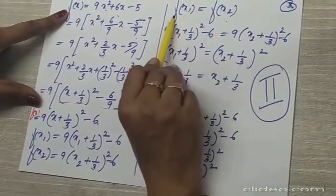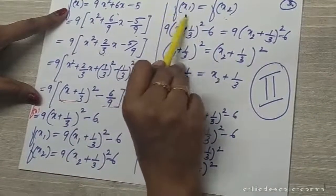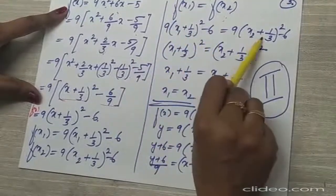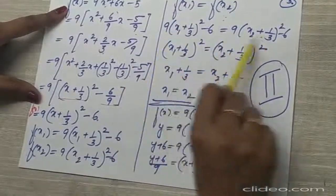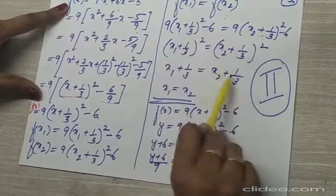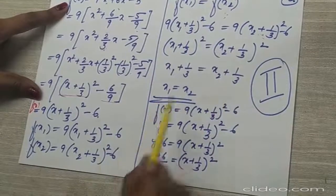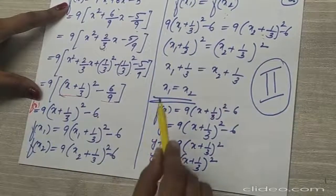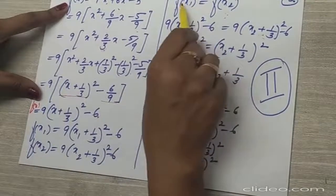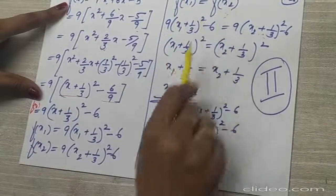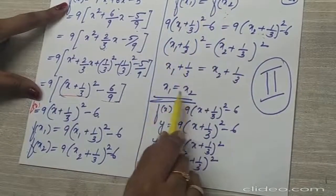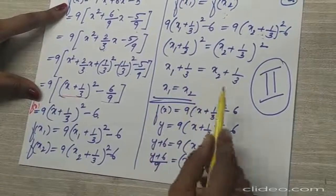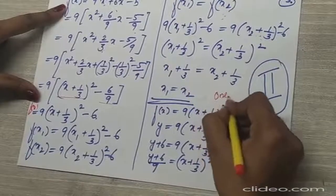For showing one-one using this form, assume f(x₁) = f(x₂) and compare. After calculation you get x₁ = x₂, confirming the function is one-one.